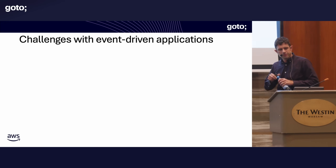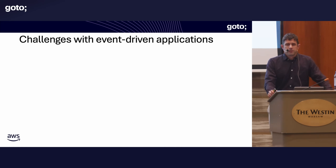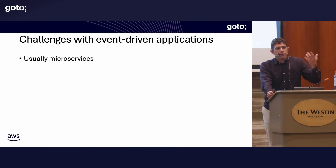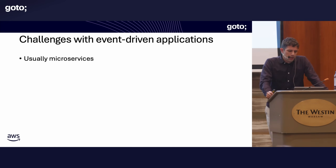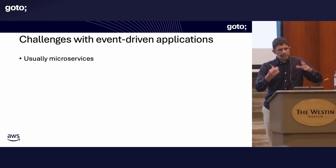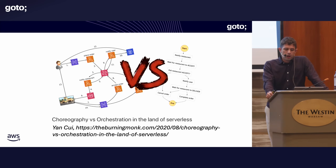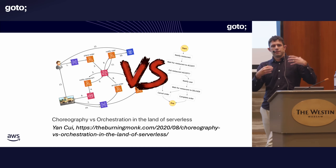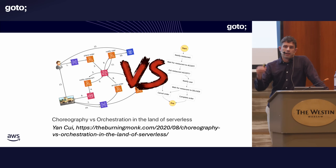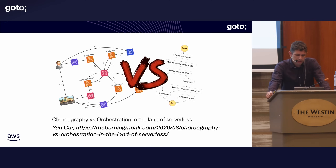Let me talk about challenges with event-driven applications — I was a slow convert due to some of the complexity. Number one: these are usually microservices, which add complexity — more services to deploy, data boundaries to manage, how to communicate data across them. Event-driven applications are almost always microservices because it doesn't make much sense to do event-driven communication within a larger monolithic service. A good article on this is from Yan Cui, the Burning Monk — his post on choreography versus orchestration in serverless, discussing when to use event-driven applications with EventBridge versus something more orchestration-like like Step Functions. That's a really good piece if you haven't read it.